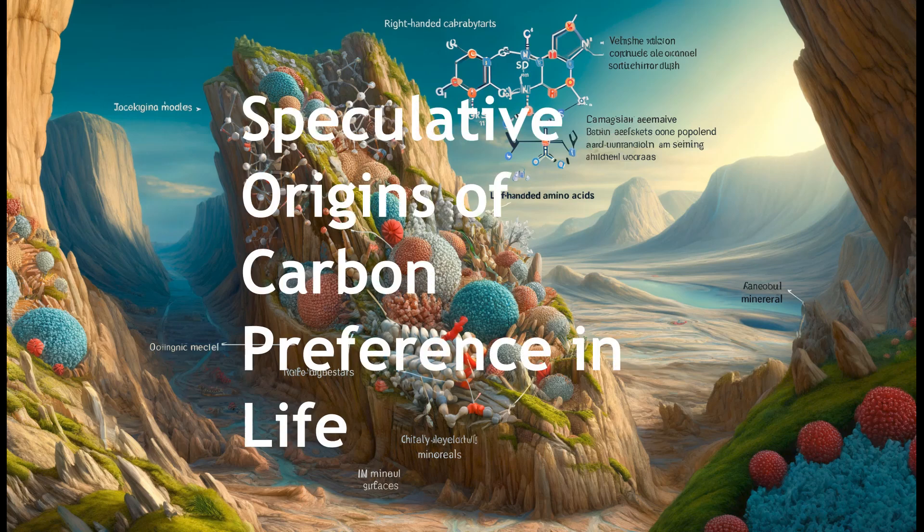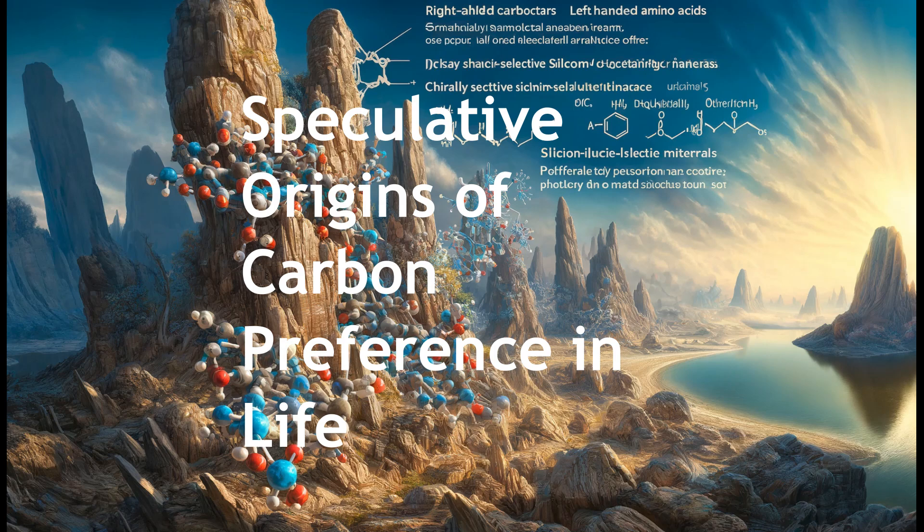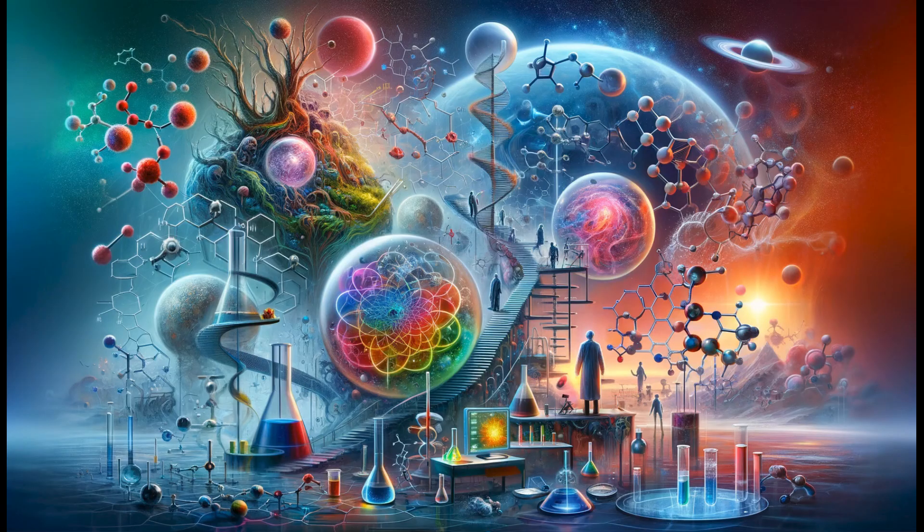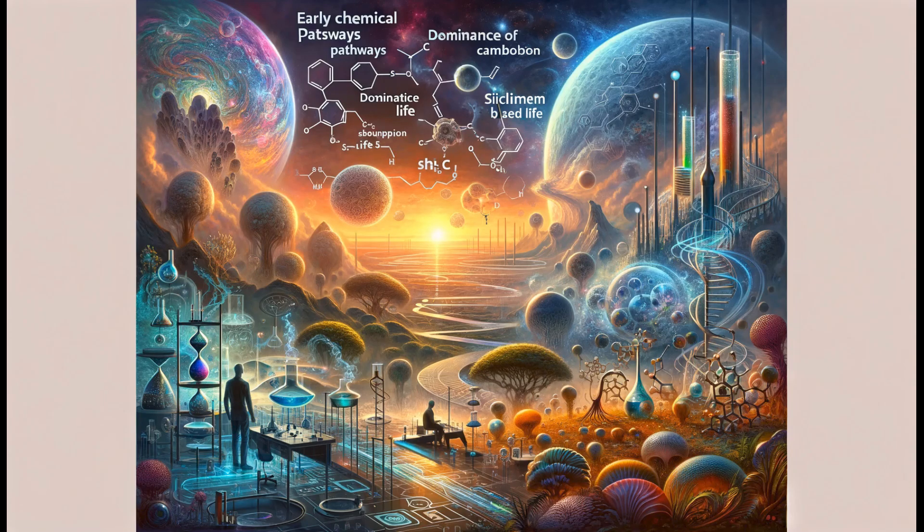An intriguing aspect of the debate between silicon and carbon in the context of the origin of life on Earth concerns how the molecular asymmetry of life, its preference for right-handed carbohydrates and left-handed amino acids, may have been influenced by ancient mineral surfaces. Chirally selective silicon-containing minerals may be included here. This scenario suggests that although silicon itself did not form the backbone of life, its chemical properties may have influenced early chemical pathways that led to the dominance of carbon-based life.